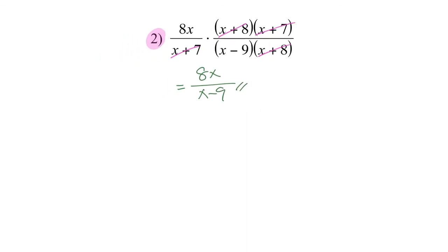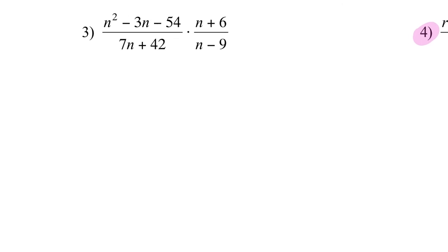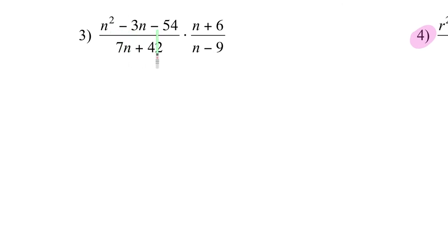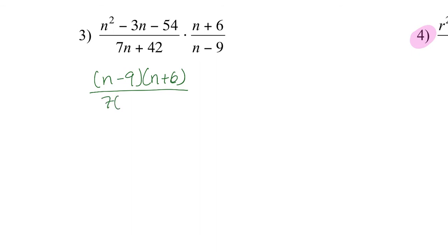Let's see number 3. On this case, first of all, I'm going to start by factoring the numerator, and I can also factor out a 7 from the denominator. So I need two numbers that multiply to give 54 and subtract to give 3 — or negative 3. So it's n minus 9 times n plus 6, divided by 7 times n plus 6 times n minus 9.